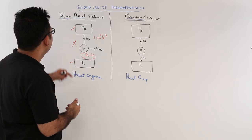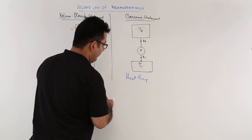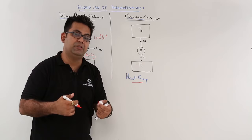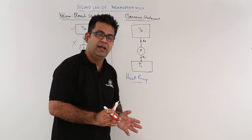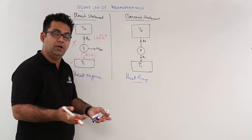This is what the Kelvin-Planck statement tells us. Now, if you come to the Clausius statement, which deals with heat pumps, refrigerators, or energy-consuming devices, it says that there cannot be any device working under two temperature limits that can spontaneously or automatically deliver heat from low temperature to high temperature.